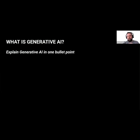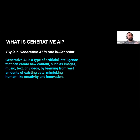Just to make sure we have a common understanding of what generative AI is, especially for those who may be joining without deep context around artificial intelligence. When I talk about generative AI, I asked ChatGPT to define it: generative AI is a type of artificial intelligence that can create new content — such as images, music, text, and videos — by learning from vast amounts of existing data, mimicking human-like creativity and innovation. It's not actually human; it mimics that creativity.